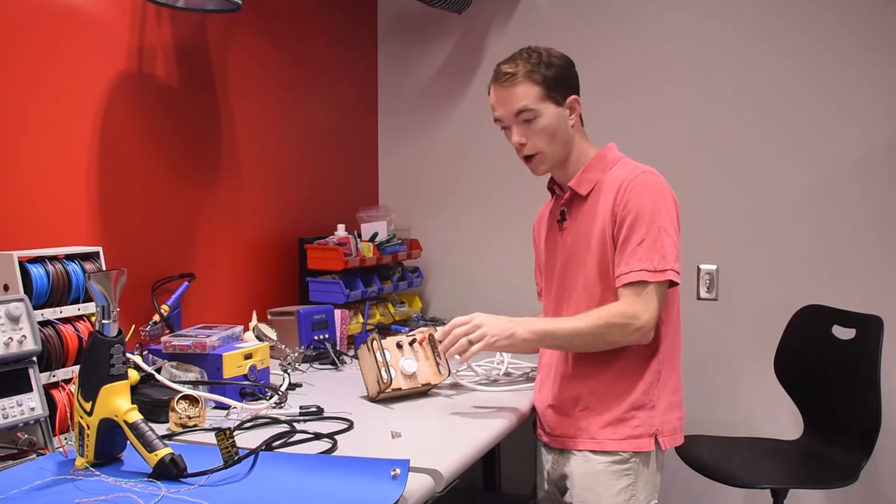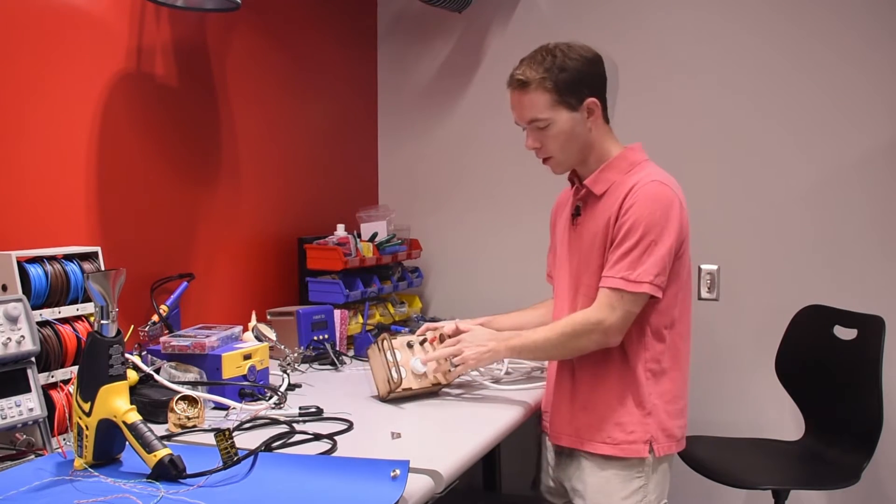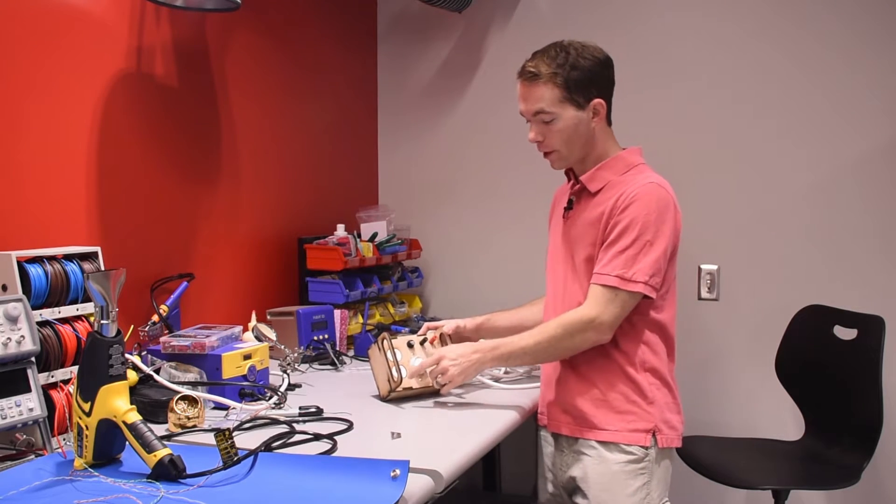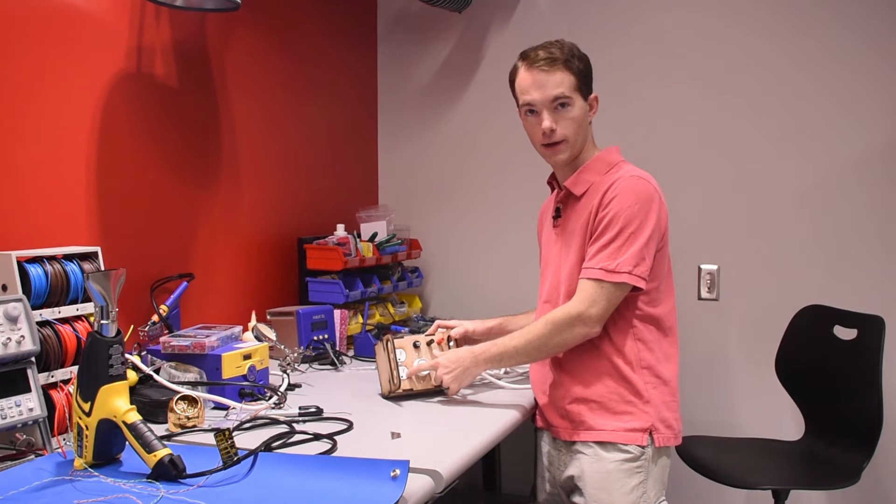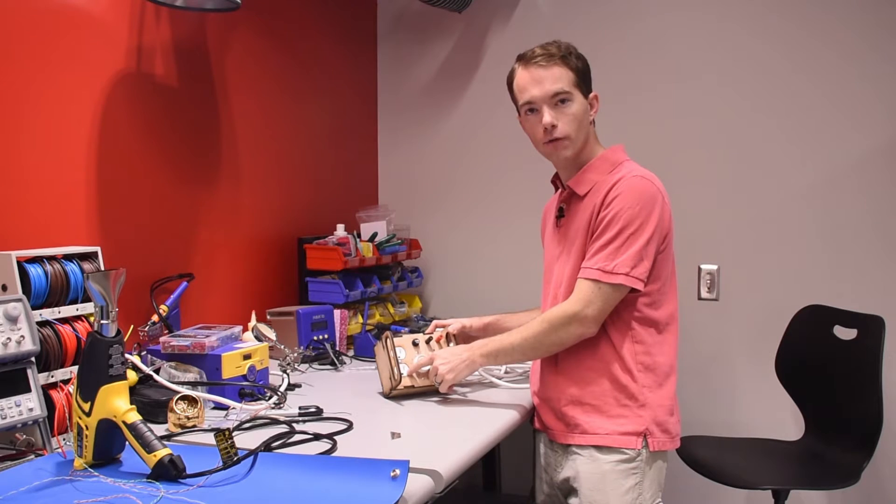Coming out of the dimmer switch, I have two possibilities. I'm either going to my 120 volt outlet here, or I'm going to the transformer. If I go to the 120 volt outlet, it's wired up just like any other switch that has a dimmer on it.